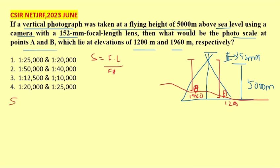So scale is equal to 152 millimeters divided by 5000 minus 1960. We will get 152 divided by how much we will get...